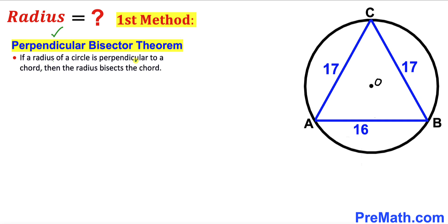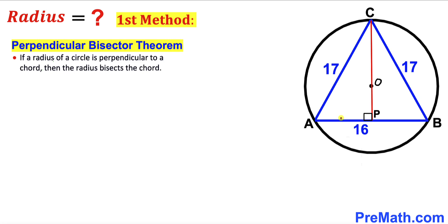If a radius of a circle is perpendicular to a chord, then the radius bisects the chord. We have dropped perpendicular CP that passes through center O. Therefore segment AP must equal segment BP. Since the total chord AB is 16, each segment is 8.